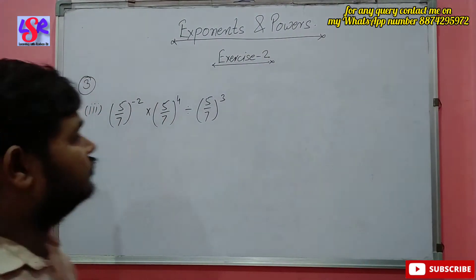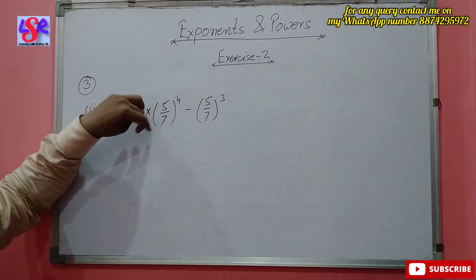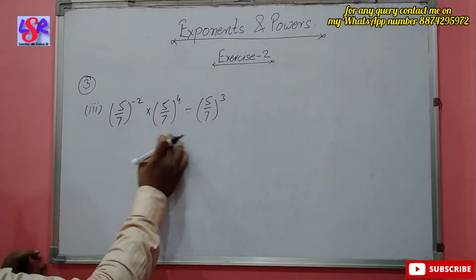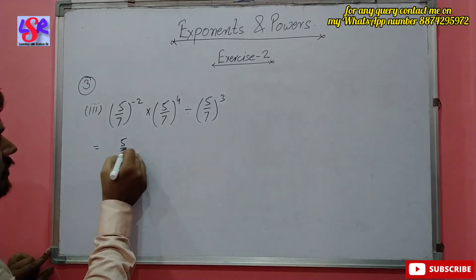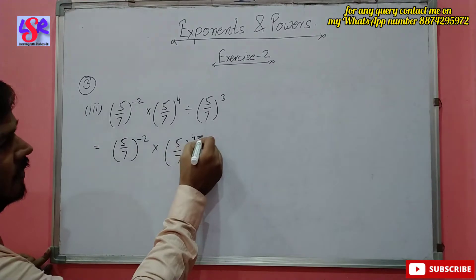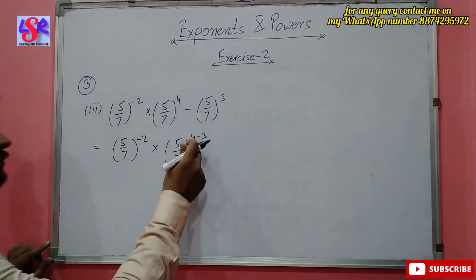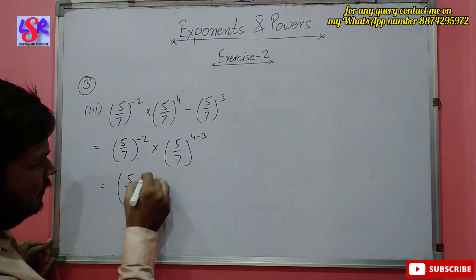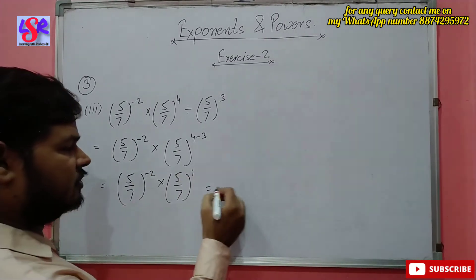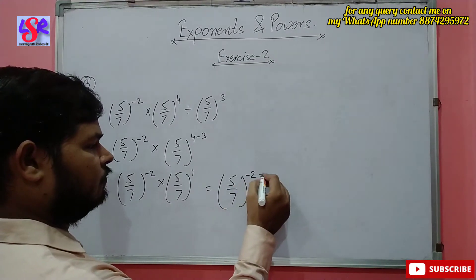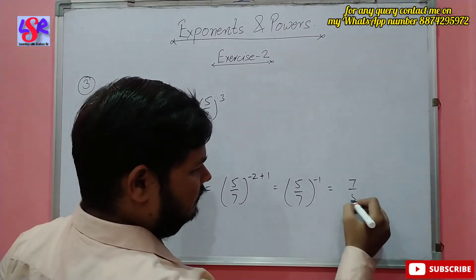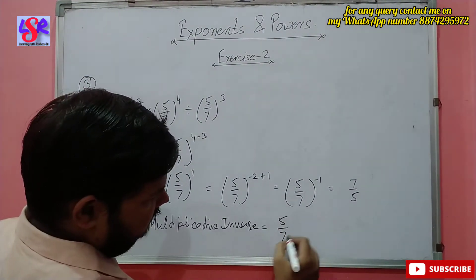The third part is 5 upon 7 to the power minus 2, multiplied by 5 upon 7 to the power 4, divided by 5 upon 7 to the power 3. We follow BODMAS, so division comes first: 5 upon 7 to the power minus 2 into 5 upon 7 to the power 4 minus 3, giving 5 upon 7 to the power 1. The bases are the same, so powers add: 5 upon 7 to the power minus 2 plus 1 equals 5 upon 7 to the power minus 1, which is 7 upon 5. The multiplicative inverse is 5 upon 7.